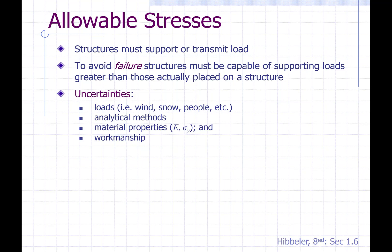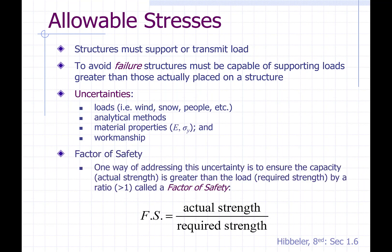These uncertainties mean that we can't just take our values at face value. We need to give ourselves some breathing room to make sure that our structures are safe. One way to do this — and this is a fairly rudimentary way, though we have certainly moved on from it — is what we call a factor of safety. This allows us to address the uncertainty and ensure that the capacity or actual strength is greater than the load or required strength by ensuring that our ratio is greater than one. So if factor of safety equals actual strength over required strength, assigning a factor of safety greater than one gives us room to account for these uncertainties.